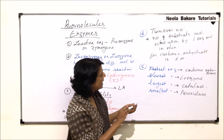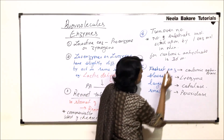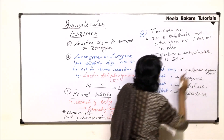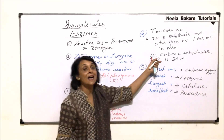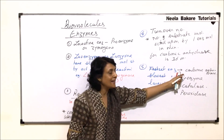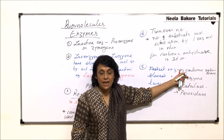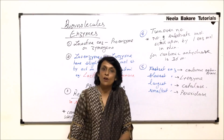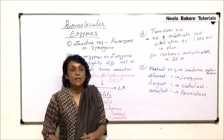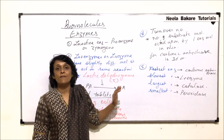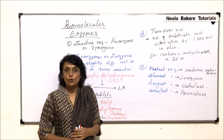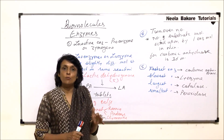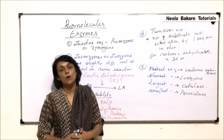Carbonic anhydrase has the highest turnover number — 36 million — making it the fastest enzyme. The slowest is lysozyme, a bactericidal enzyme. The largest enzyme is catalase and the smallest is peroxidase or oxidase. With this we have completed the enzyme part, which is included in the biomolecules chapter.